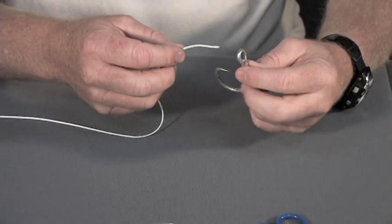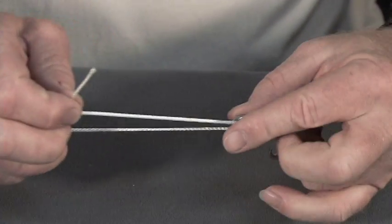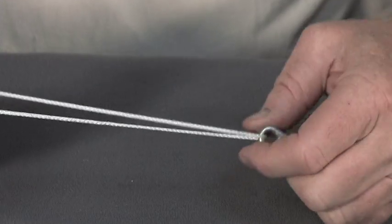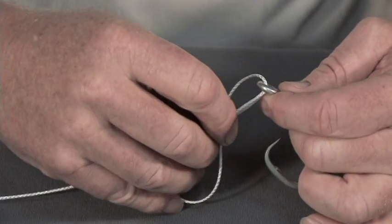Take the end of your line and bring it up through the eye of the hook and lay it along your main line. A lot of times people will go through the eye of the hook twice.